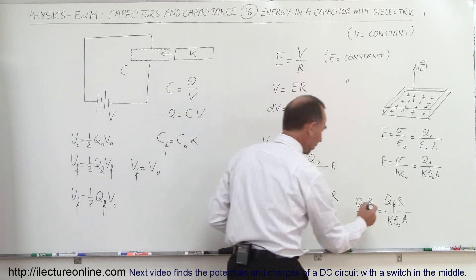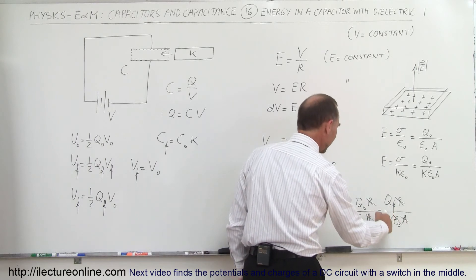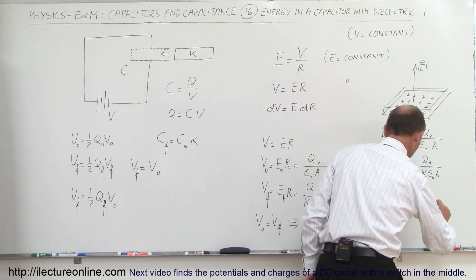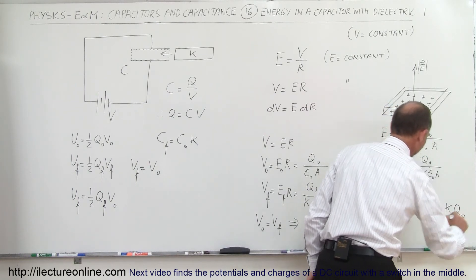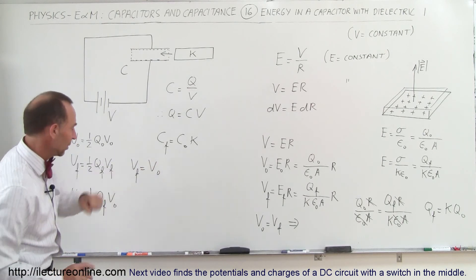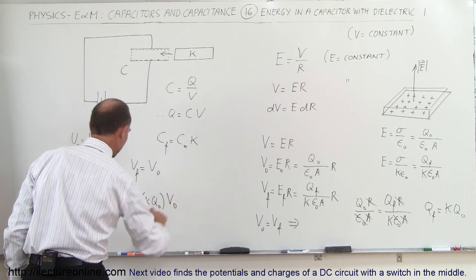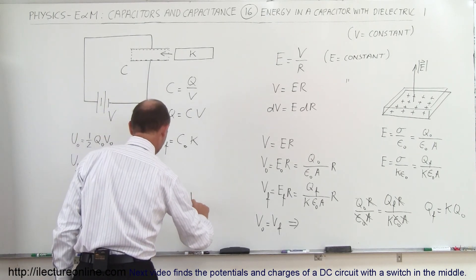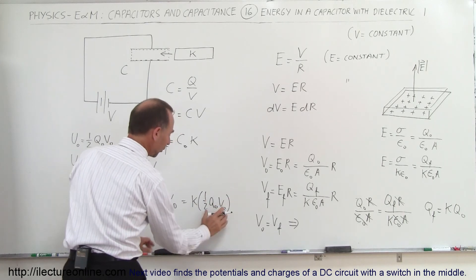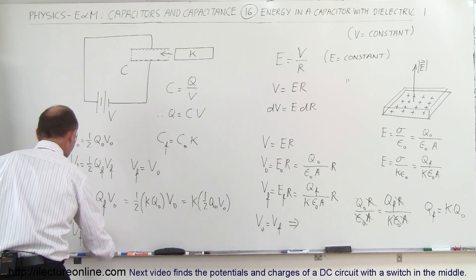Setting the two expressions equal: Q_initial times R over epsilon-naught times A equals Q_final times R over K times epsilon-naught times A. Canceling R, A, and epsilon-naught from both sides, we find Q_final equals K times Q_initial. Substituting back into U_final equals one-half times Q_final times V_initial, we get U_final equals one-half times K times Q_initial times V_initial, which equals K times one-half Q_initial V_initial.